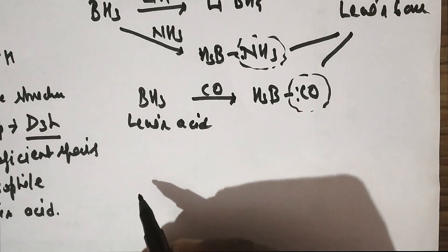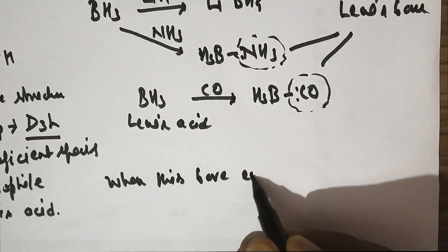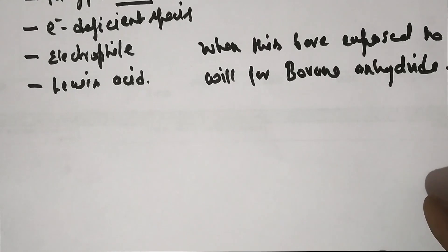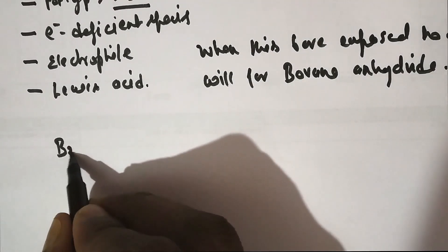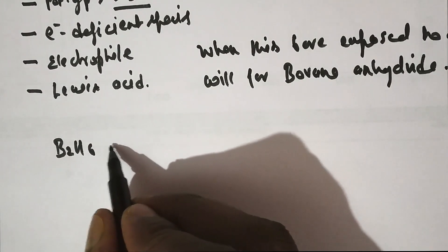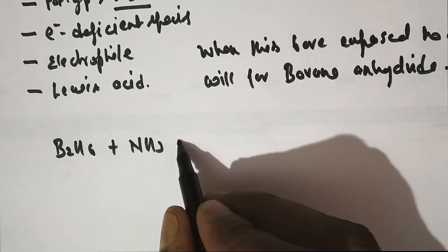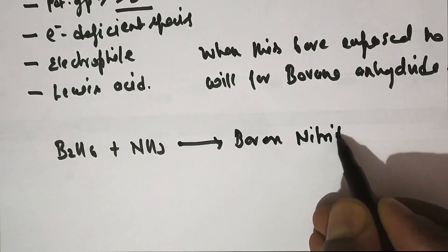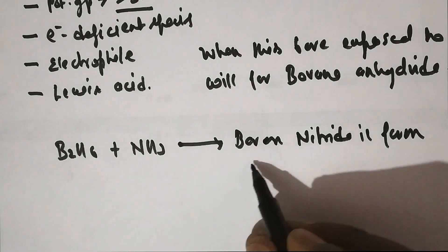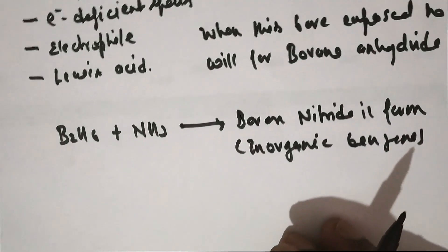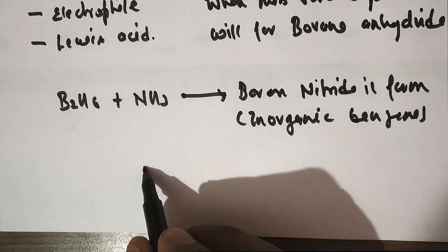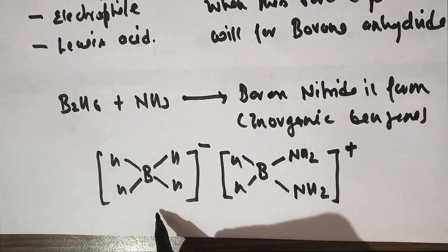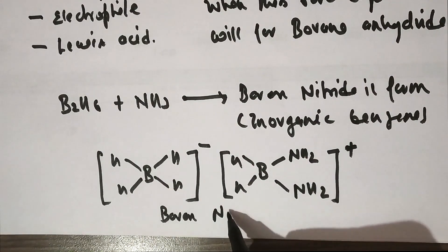Another property of boranes: when borane is exposed to air, it will form borane anhydride. In a simple reaction, suppose we have a molecule with general formula B2H6, generally known as diborane. When it reacts with NH3, which acts as a Lewis base because it is electron-rich, then boron nitride is formed. Its general formula gives a molecule also known as inorganic benzene.